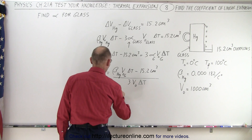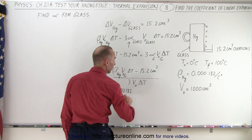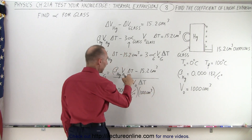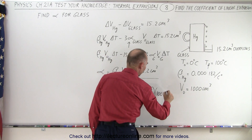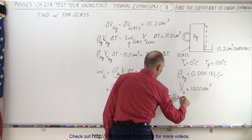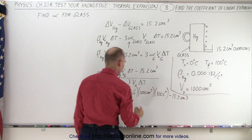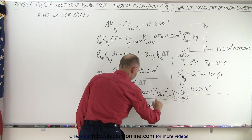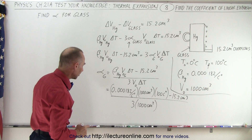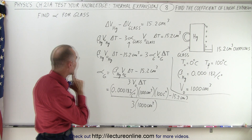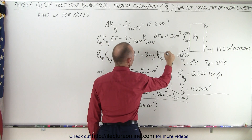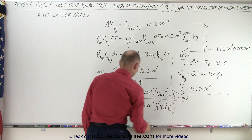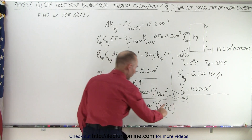So this equals 0.000182 per centigrade degree, times the original volume of 1,000 cubic centimeters, times the change in temperature of 100 centigrade degrees, minus 15.2 cubic centimeters — divided by 3 times 1,000 cubic centimeters times 100 centigrade degrees. Note that 100 centigrade degrees is the difference between two temperatures, not to be confused with 100 degrees centigrade, which is the boiling point of water. The centigrade degrees cancel, leaving units of per centigrade degree.